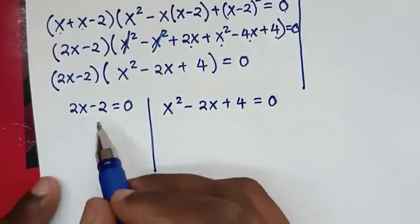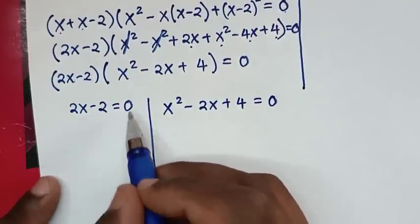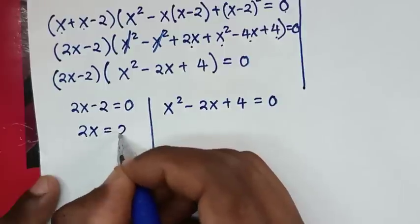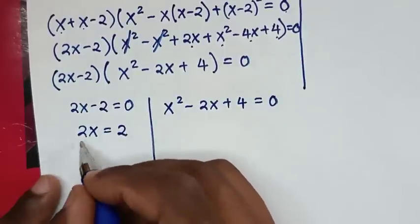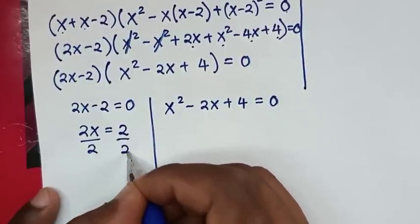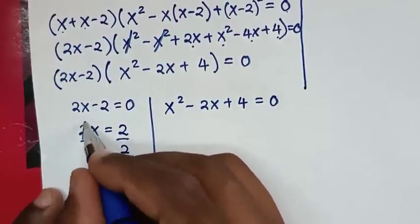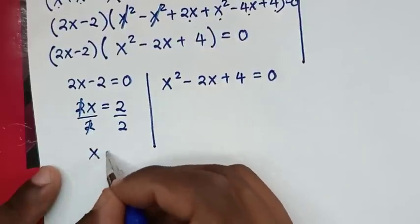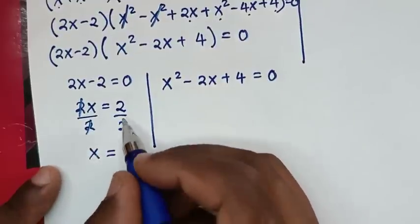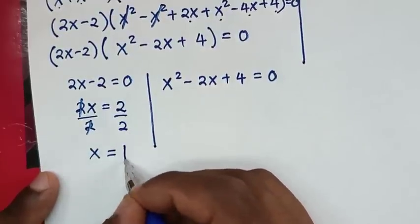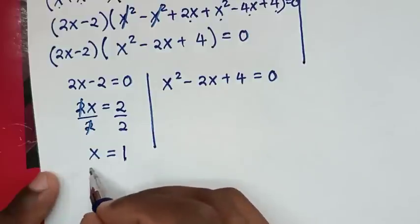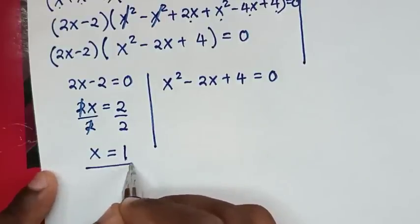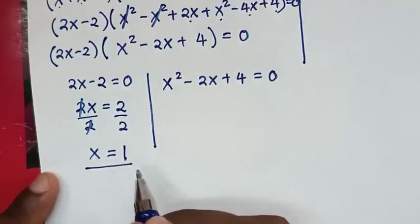From the first solution, taking negative 2 to the right side gives 2x equals 2. Dividing both sides by 2, x equals 1. So this is the first answer for x, which is the real solution.